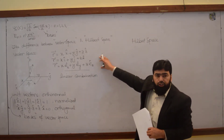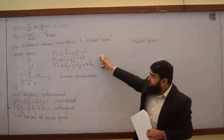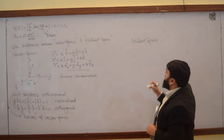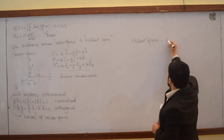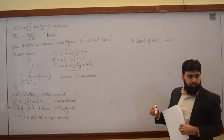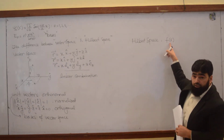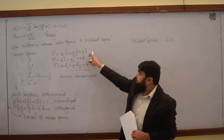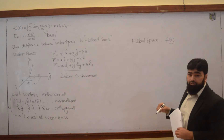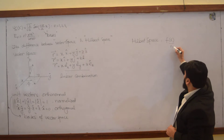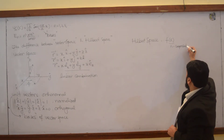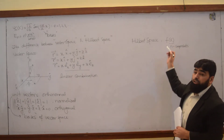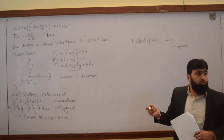Vector space is a three-dimensional space, and in vector space you can resolve any vector into its components. Now Hilbert space is not dealing with vectors — Hilbert space is dealing with functions. How many components are there for a vector? Three only, no more than three. But how many components does a function have? An infinite number of components, including polynomials.